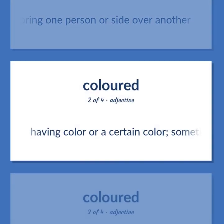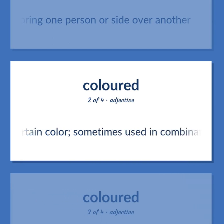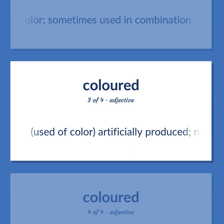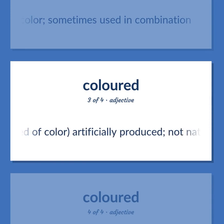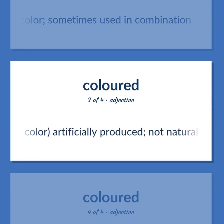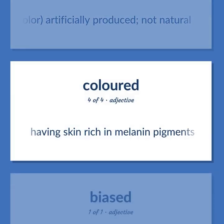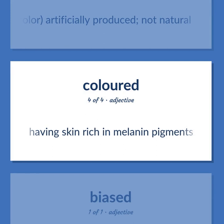Colored — having color, or a certain color; sometimes used in combination. Used of color: artificially produced, not natural. Also: having skin rich in melanin pigments.